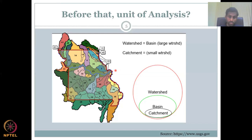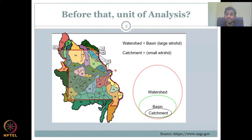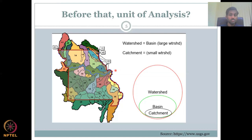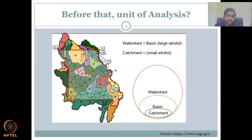A watershed catches the water, combines or concentrates it to one point, and from there it leaves. This connects to what we discussed earlier about fern-shaped, elongated, and leaf-shaped watersheds — they take the water, put it into stream channels, and bring it to one point out as discharge. When we discussed discharge, we discussed this watershed concept.